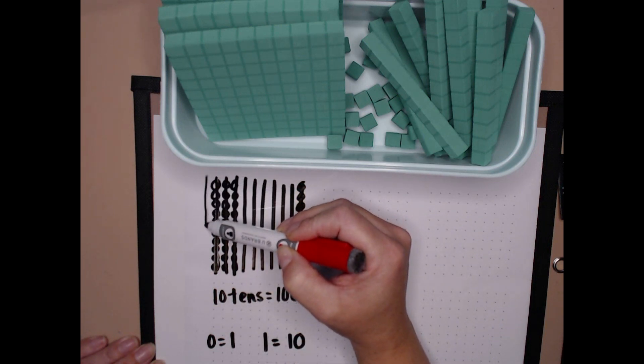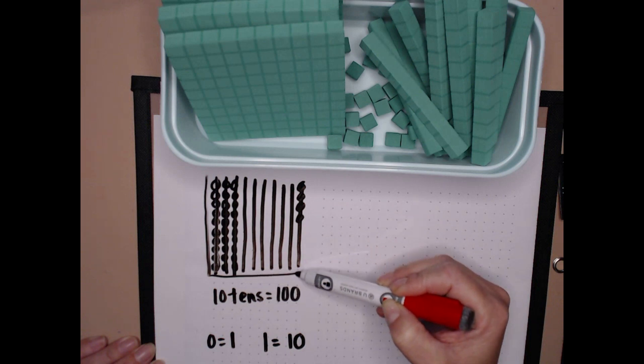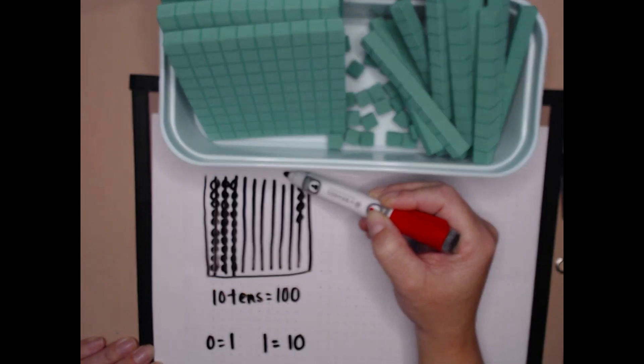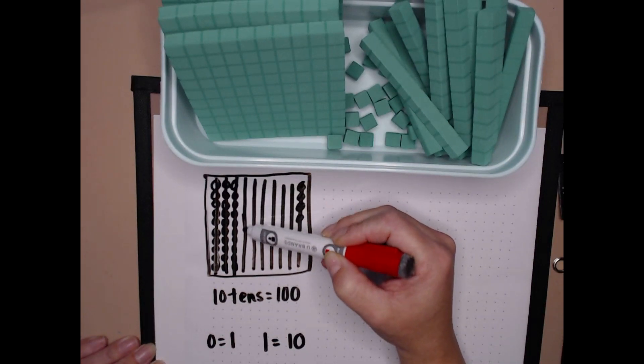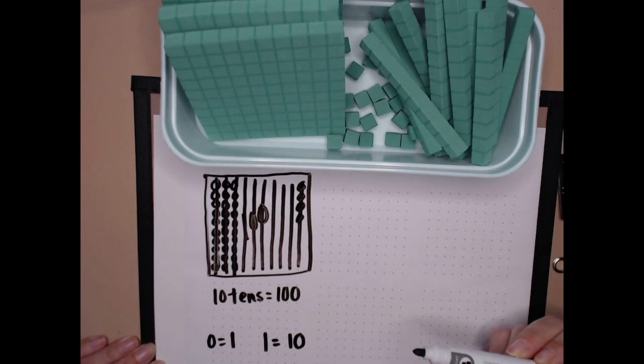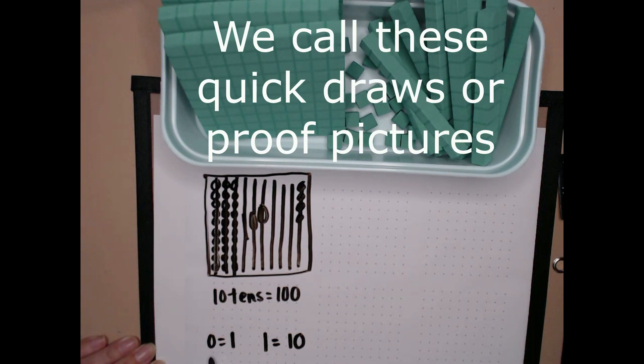So 10 tens equals 100. But to make it a shortcut, we're going to draw a box around it. And now we're going to call that box 100. And if I call it 100, then I know a circle equals 1, a stick equals 10, and a square is going to equal 100.